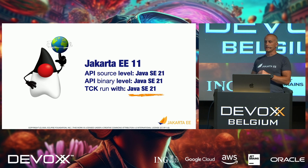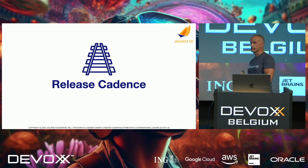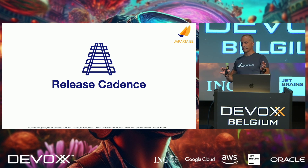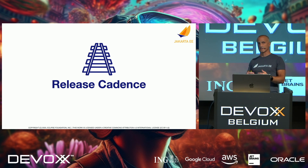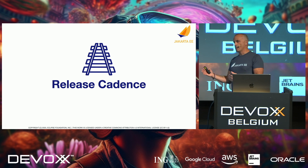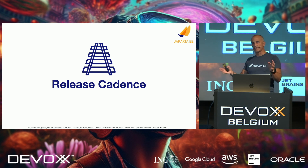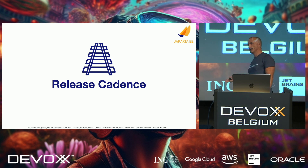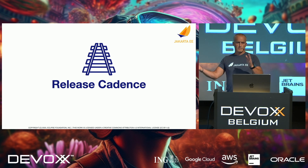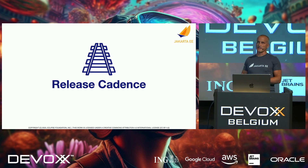The TCKs will run on Java SE 21, so all implementations will be required to be on Java SE 21. We're also introducing a release cadence we've been working on for a while: we want to release Jakarta EE about six to nine months after a Java LTS release. Java 21 was released in September, so around summer next year we're hoping to get EE 11 out, and we'll repeat that for the next LTS about six to nine months after.